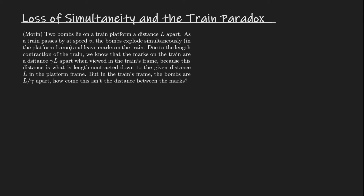I'll introduce this through a problem from Warren. Two bombs lie on a platform a distance L apart as a train travels by at speed v. The bombs explode simultaneously in the platform frame and leave marks on the train. Due to length contraction of the train, the marks on the train are a distance gamma L apart when viewed in the train's frame, because this distance is length contracted down to L in the platform frame, but in the train's frame the bombs are L over gamma apart. How come this isn't the distance between the marks?